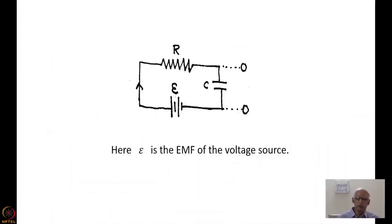So let us now see how the charging takes place. Let us take a very simple circuit which consists of a capacitor C and a resistance R, and we put a battery with electromotive force epsilon. Then if you close this circuit — suppose I put a battery, I put a key in between, and close that key — then the circuit will be closed, and the current will start flowing, and charge will be collected on the capacitor, meaning the energy will be stored.